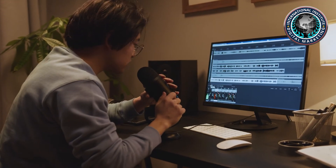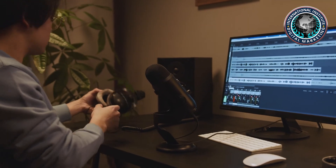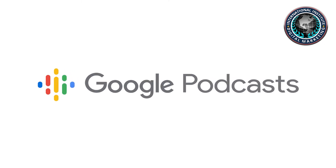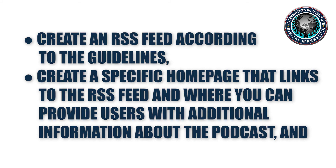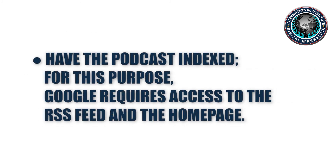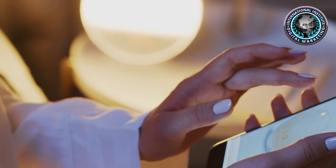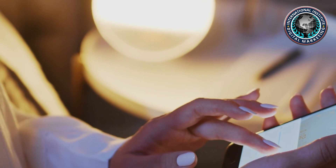Tip number five: submit your podcast to Google Podcasts. If you want your podcast to be found easily through Google services, you should use Google Podcasts. To offer a podcast via Google, follow these steps: create an RSS feed according to the guidelines, create a specific home page that links to the RSS feed and provides users with additional information about the podcast, and have the podcast indexed. Google requires access to the RSS feed and the home page. If you request Google to crawl your site, your new feed should be listed on Google within a week.